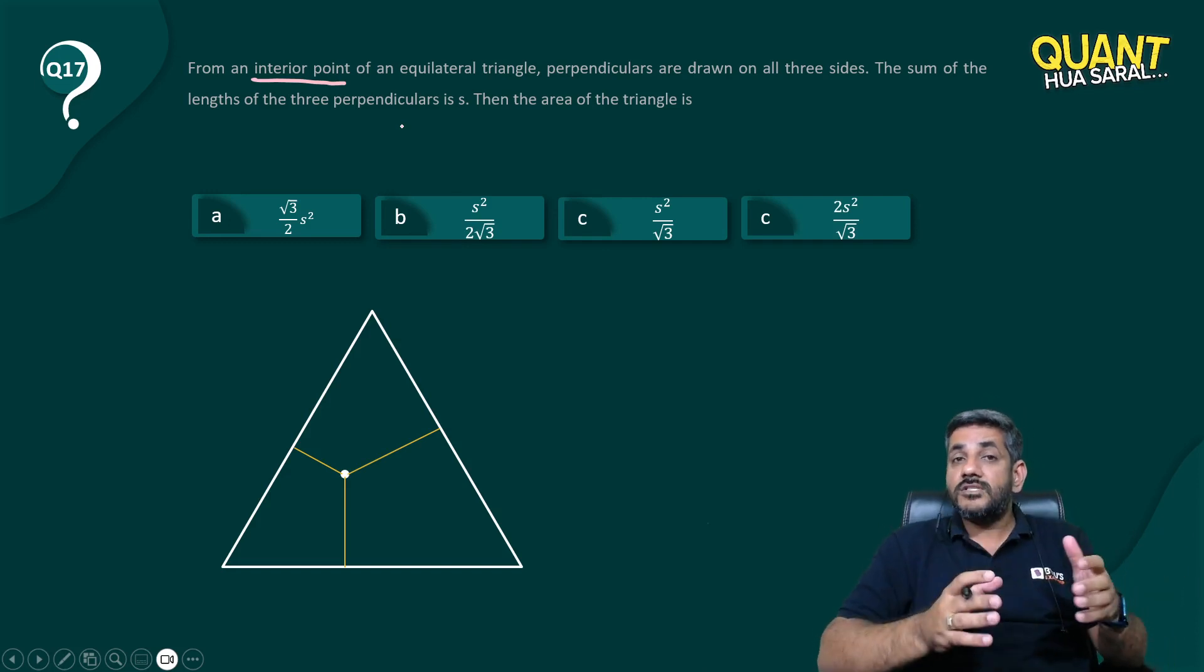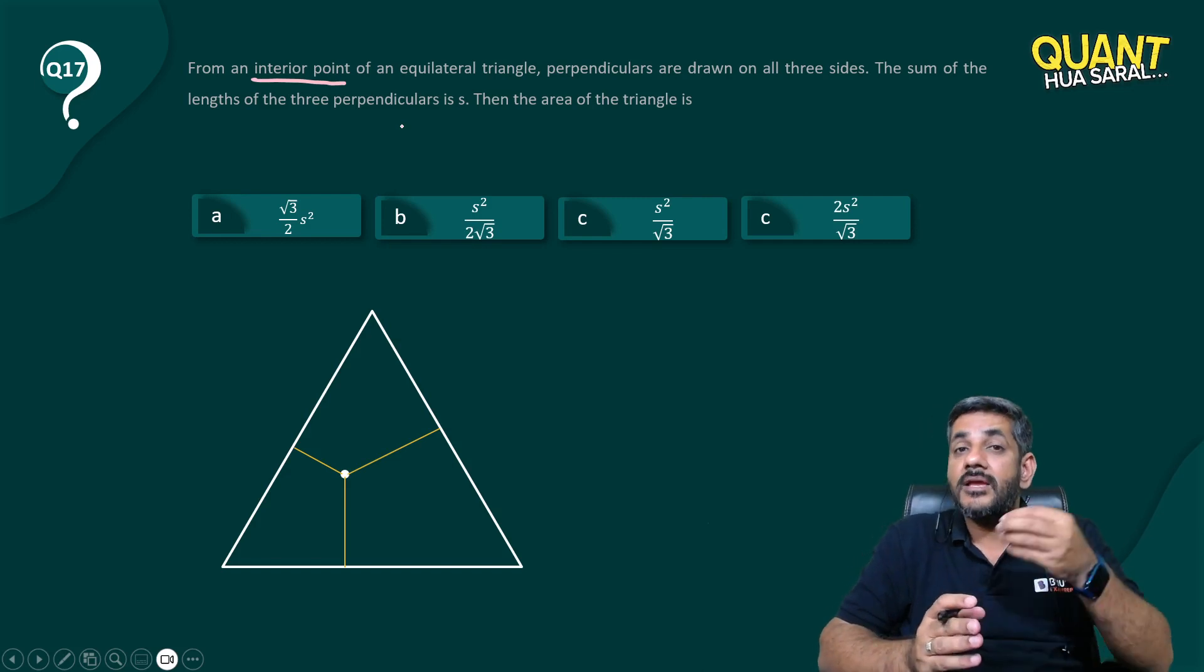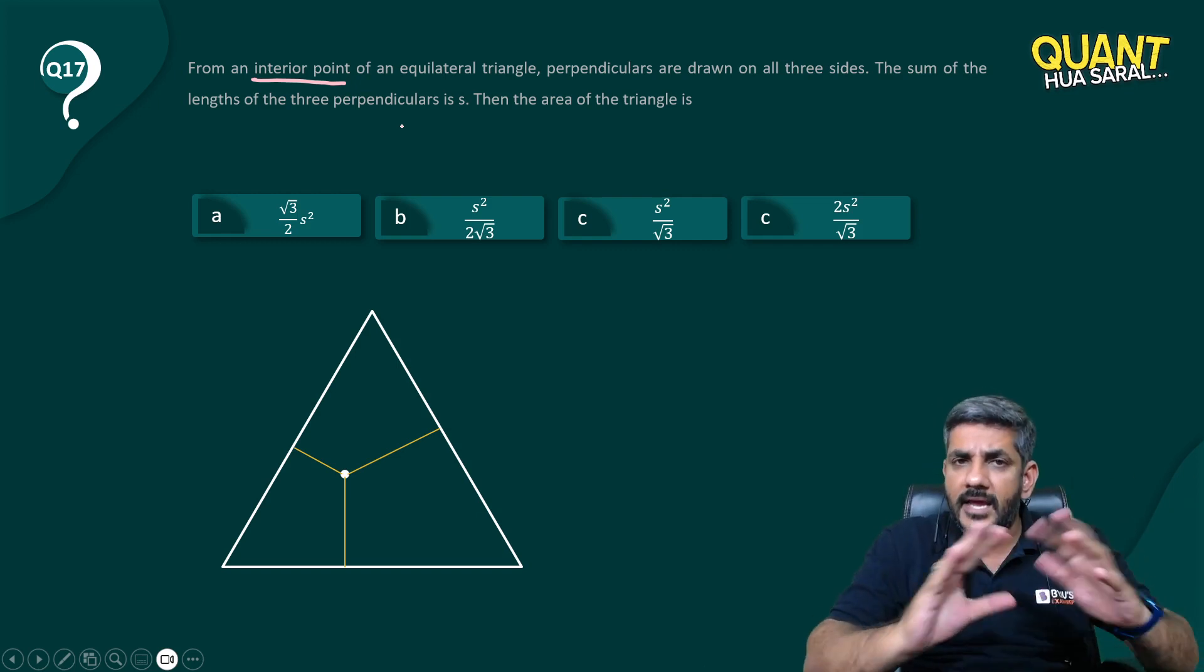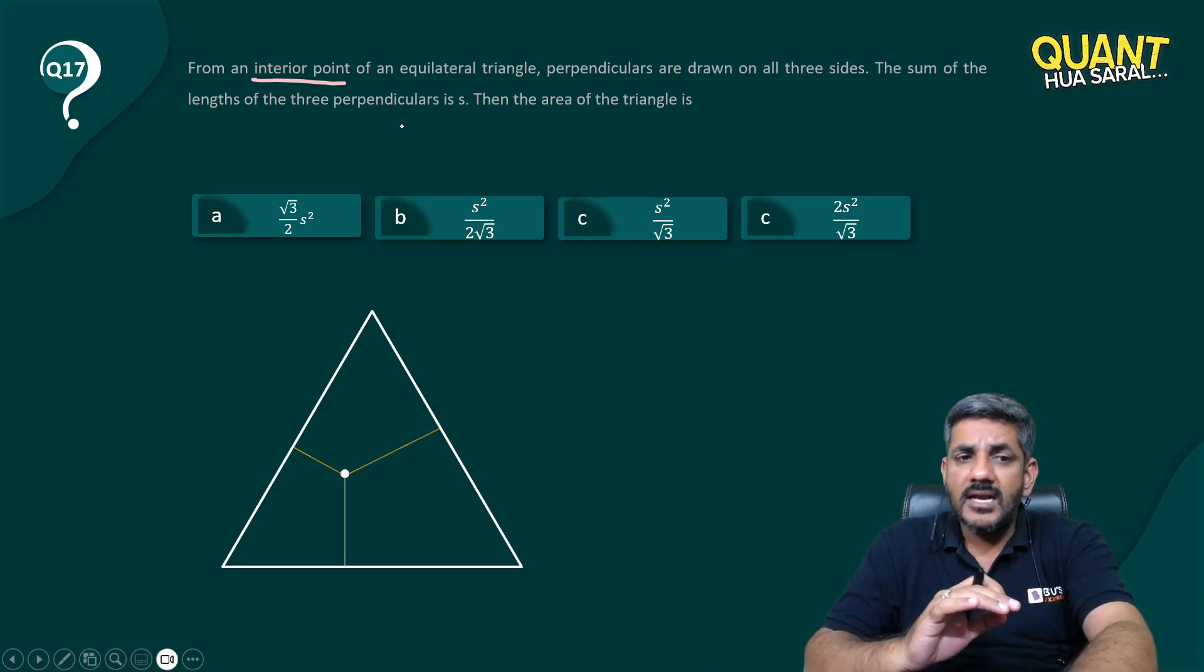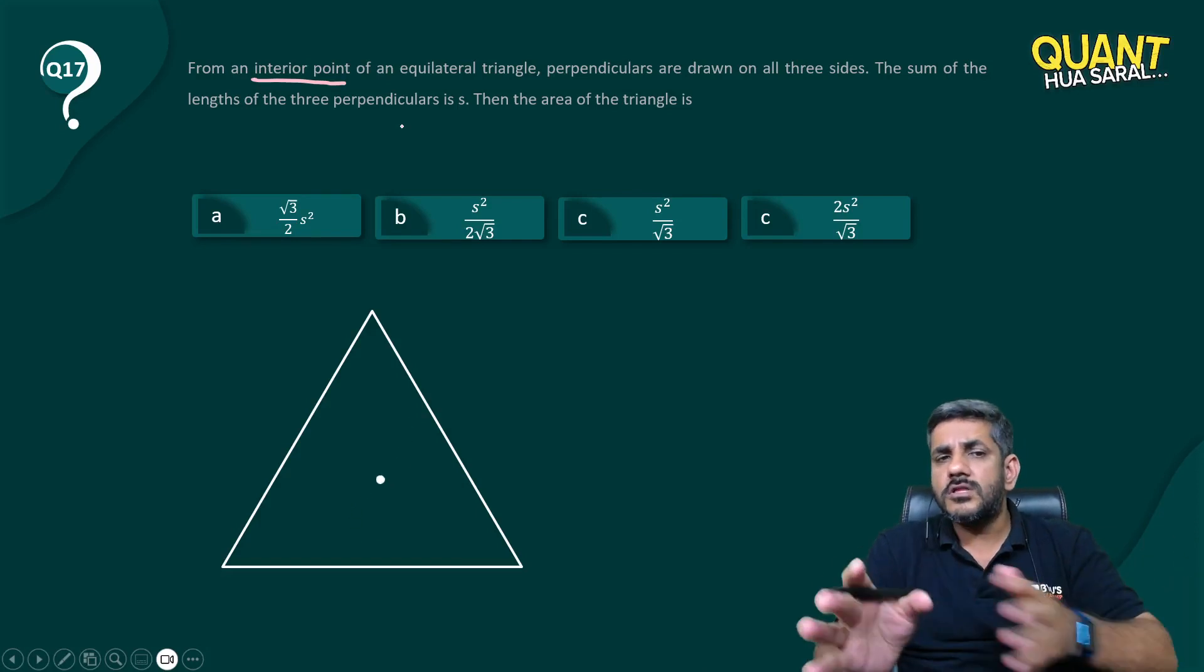Rather, I would say this is not a problem—actually, it's a blessing in disguise. The point can be anywhere. Can't I choose the point at a point which is most comfortable for me? Because it can be anywhere inside the triangle, let's take it at a position from which it is easy to calculate the sum of all three altitudes.